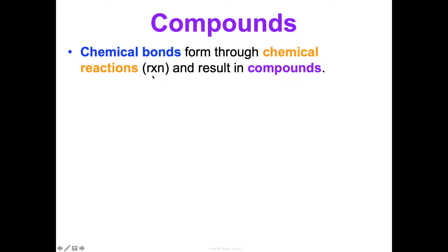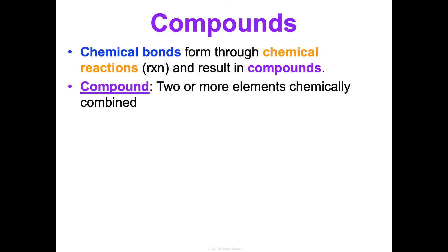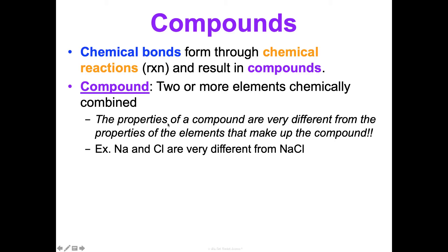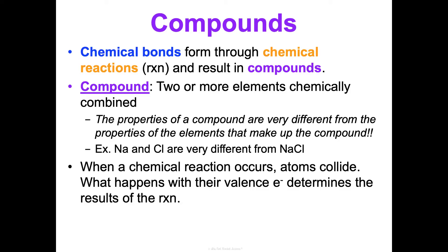Chemical bonds form through chemical reactions and result in compounds. A compound is when two or more elements are chemically combined. Importantly, the properties of a compound are very different from the properties of the individual elements that make it up. For example, sodium on its own and chlorine on its own are very different from sodium chloride, which is table salt that you're able to eat.